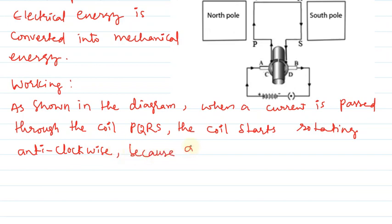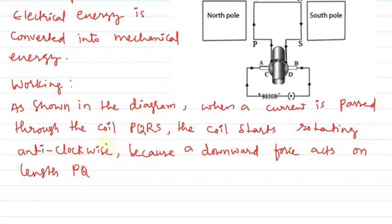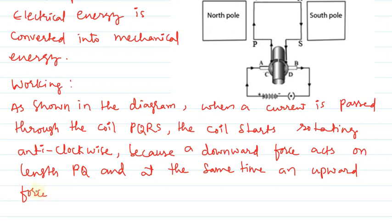Because a downward force acts on length PQ, and at the same time an upward force acts on RS. Therefore the coil rotates in anti-clockwise direction.